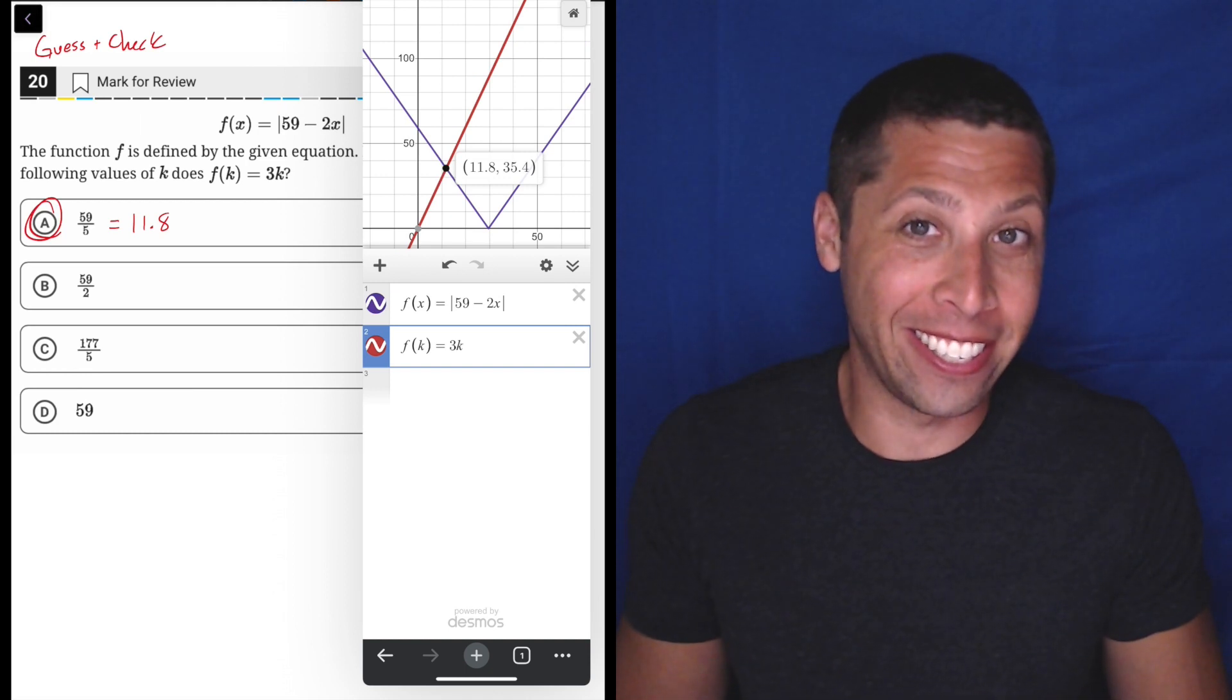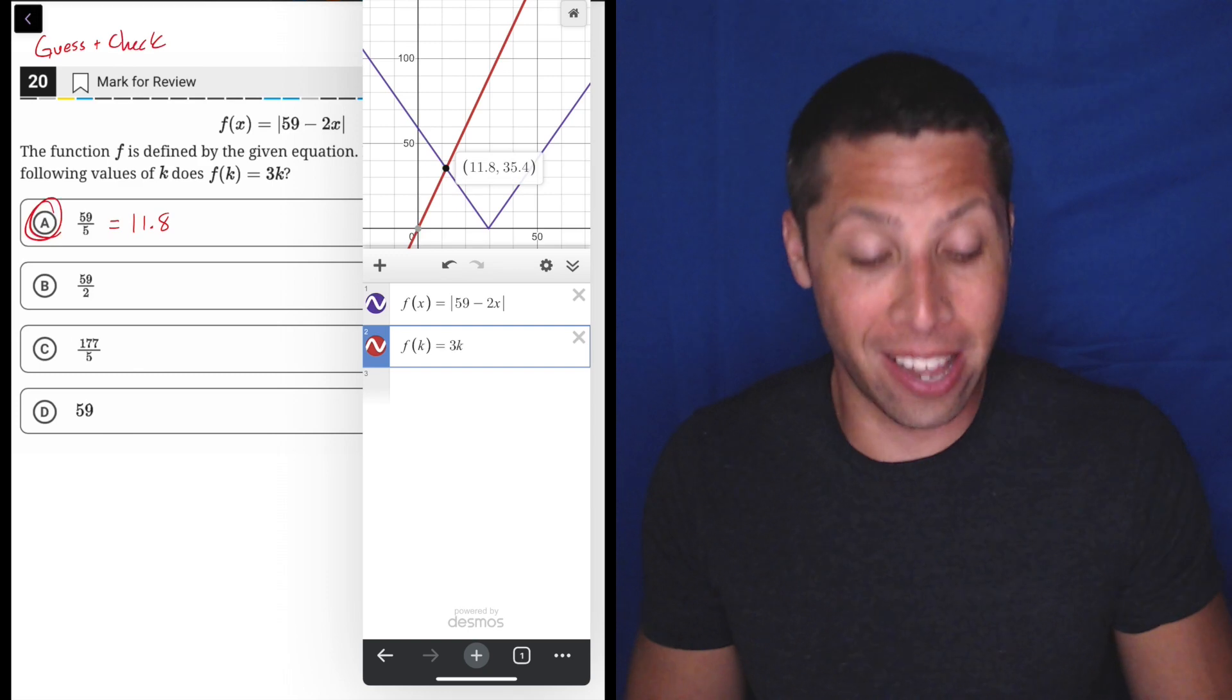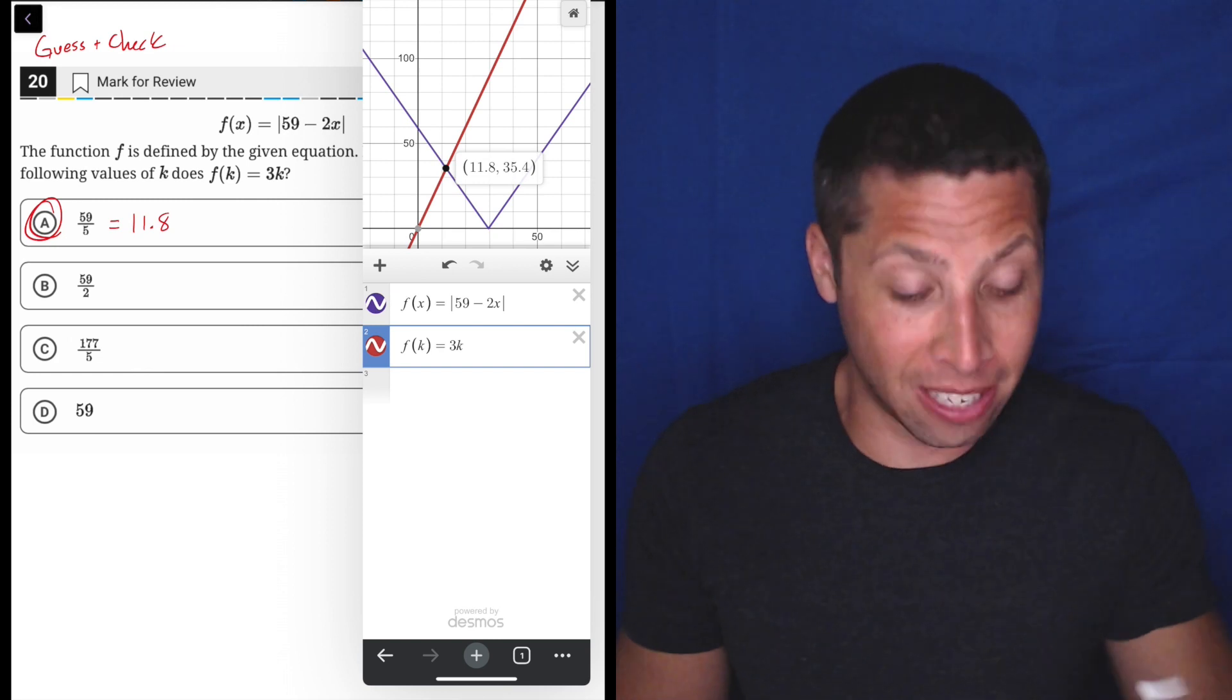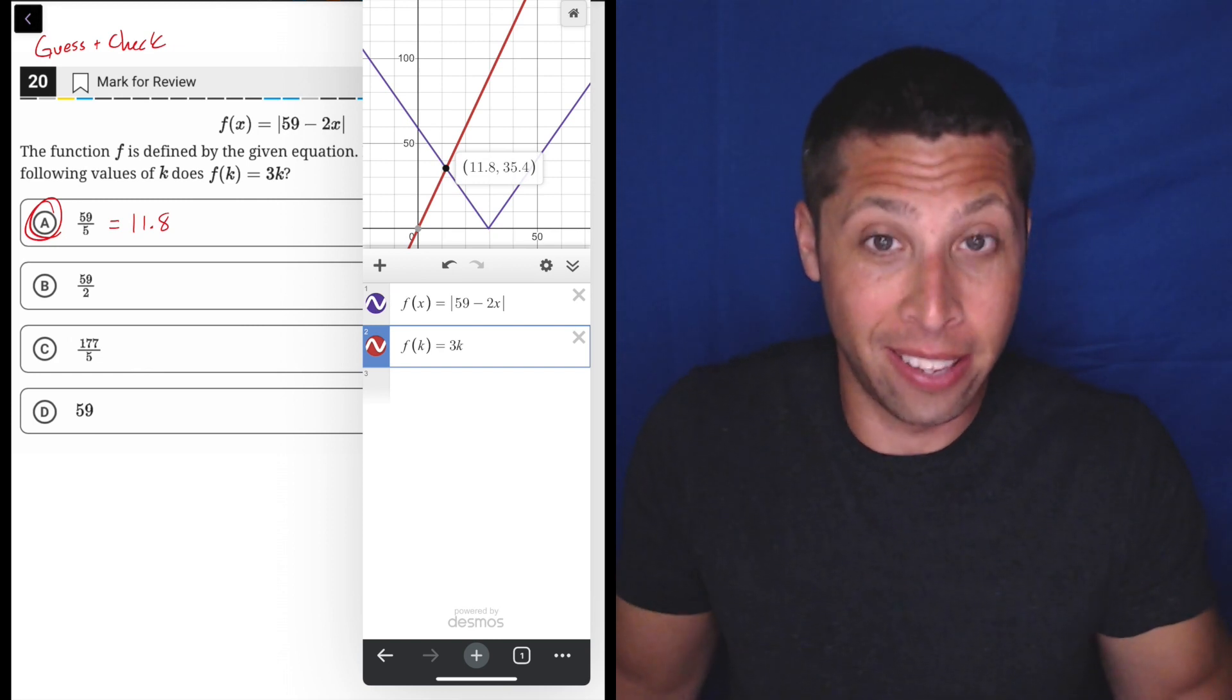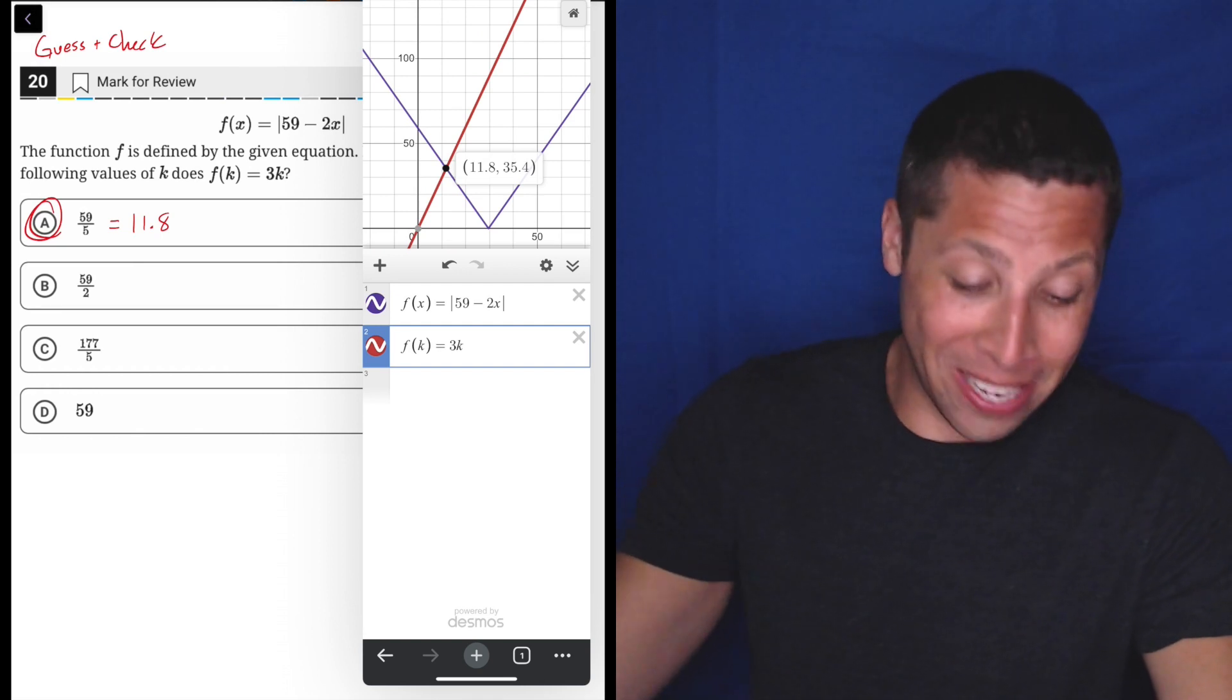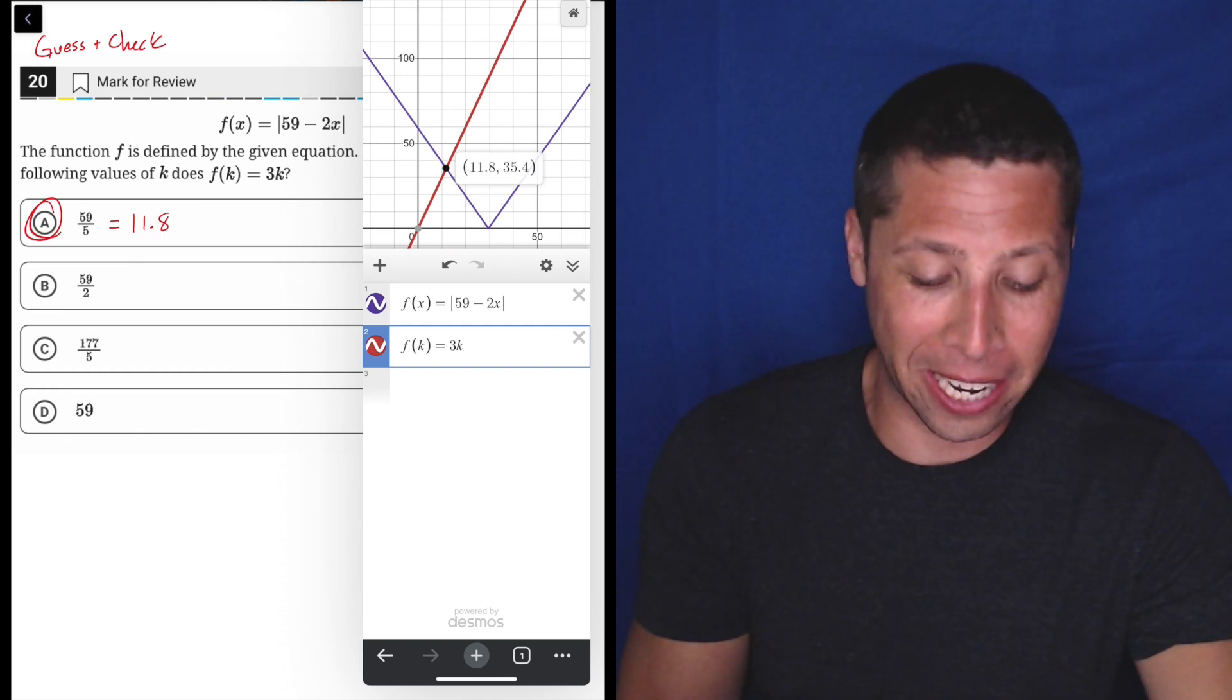There's really no reason to deal with any algebra here because it's basically a system of equations. And Desmos just graphs the two equations. And then because it's so easy to tap the intersection point, that's that. We're done.